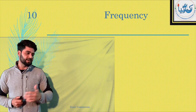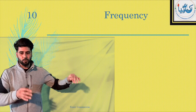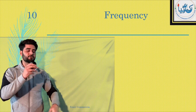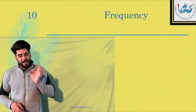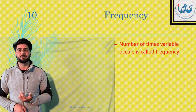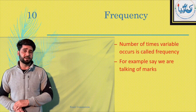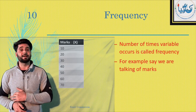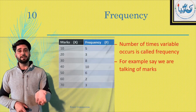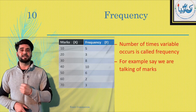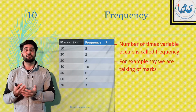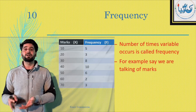How frequent? For example, mere class mein ten marks aage paanch bachon ko — paanch bachon ko aage ten marks. We are talking of marks — marks is variable. Paanch ko aage, paanch is frequency. The number of times a variable occurs is called frequency. For example, say we are talking of marks: 10, 20, 30, 40, 50, 60 and 70. Ten aaya paanch baar — five is frequency. Twenty three times — three is frequency. Thirty eight times, forty ten times, fifty six times, sixty two times, seventy three times. This is what you call frequency.